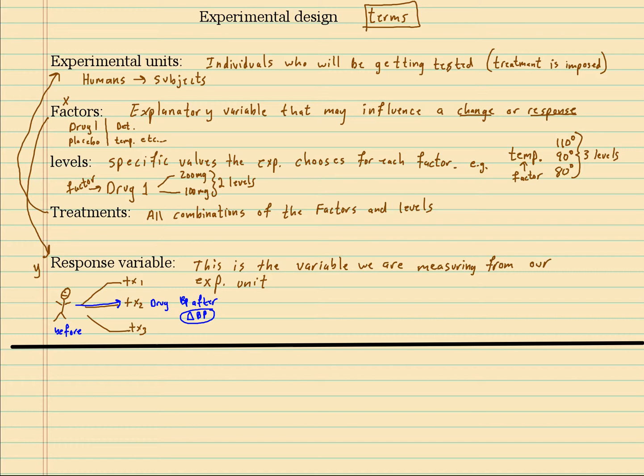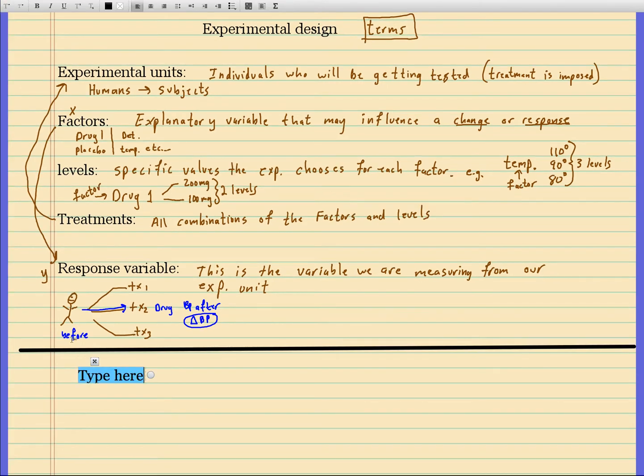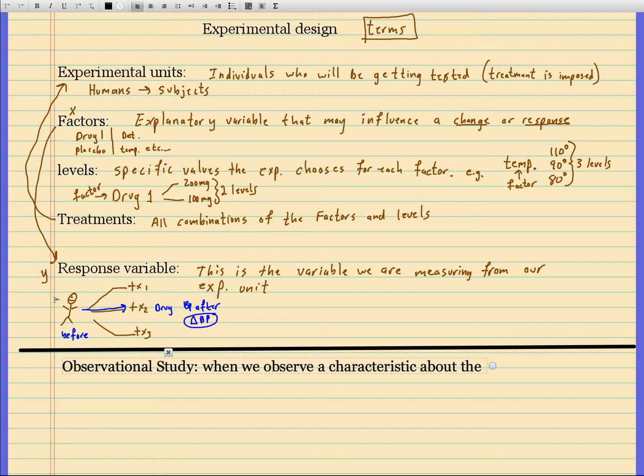The chapter starts with whether it's an observational study or an experiment. This is very important. An observational study is when we observe a characteristic about the experimental units.